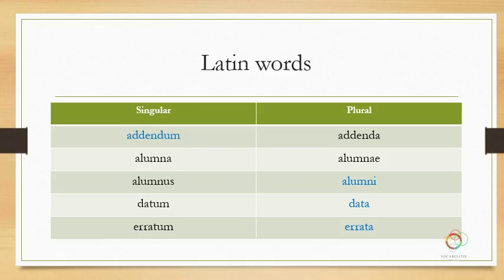Let's look at some Latin words. The words highlighted in blue are the forms we're more familiar with and used more often, whereas the other forms in black are ones we don't know very well. I'll try to tell you based on my experience which words are frequently used and which are not. The word 'addendum' refers to something added — like an additional page in a document. The plural form is 'addenda,' though usually only one thing is added, so 'addendum' is more common.